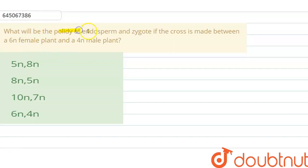First option is given 5n and 8n, 8n and 5n, 10n and 7n, and 6n and 4n. So the question is asking about ploidy.